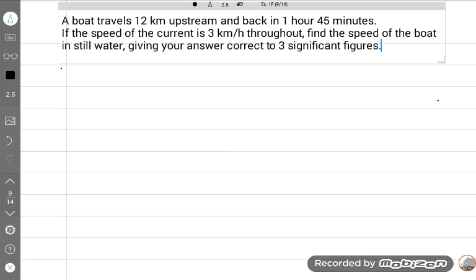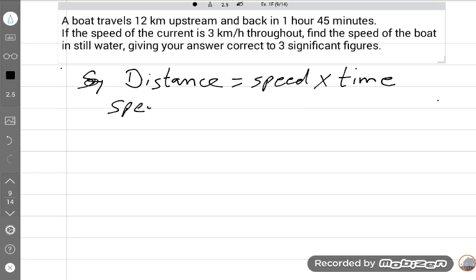According to this question, recall the relation between distance, time, and speed. Distance is equal to speed multiplied by time. So we need to find speed. Speed is equal to distance divided by time.